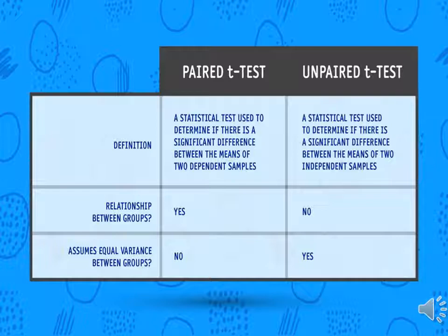The difference between paired and unpaired t-test: A paired t-test is a statistical test used to determine if there is a significant difference between the means of two dependent samples, whereas an unpaired t-test is used for two independent samples. In a paired t-test, the two samples are the same subjects; in an unpaired t-test, they are two different groups. There is a relationship between groups in the paired test, but no relationship in the unpaired t-test. Also, we cannot assume equal variance in the paired t-test, but we can assume equal variance in the unpaired t-test.